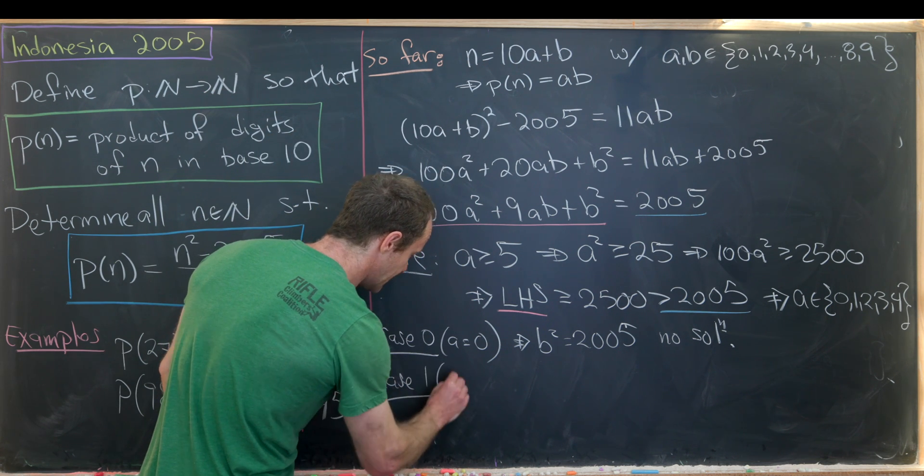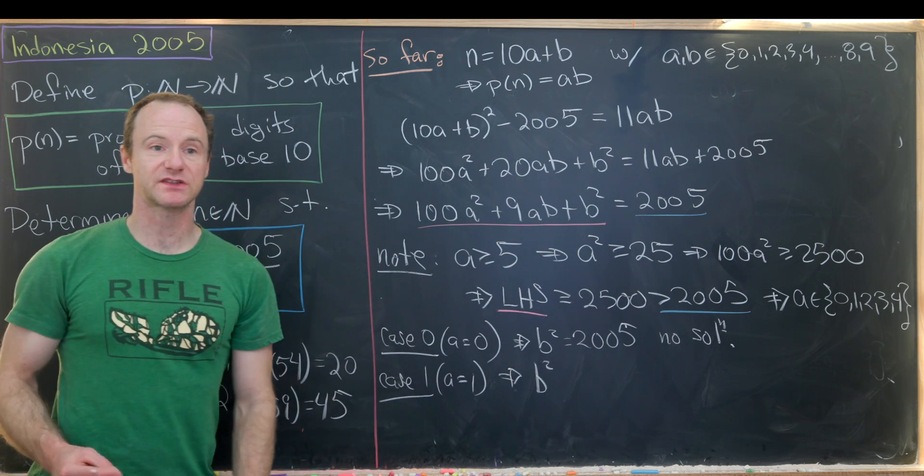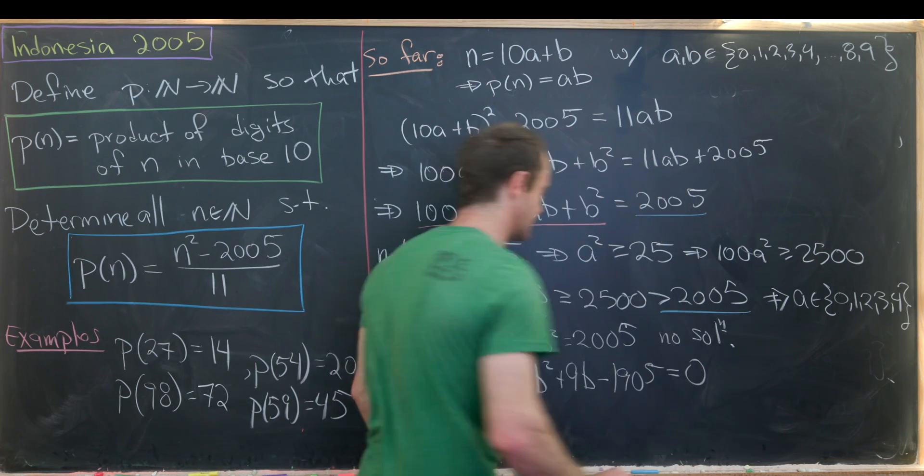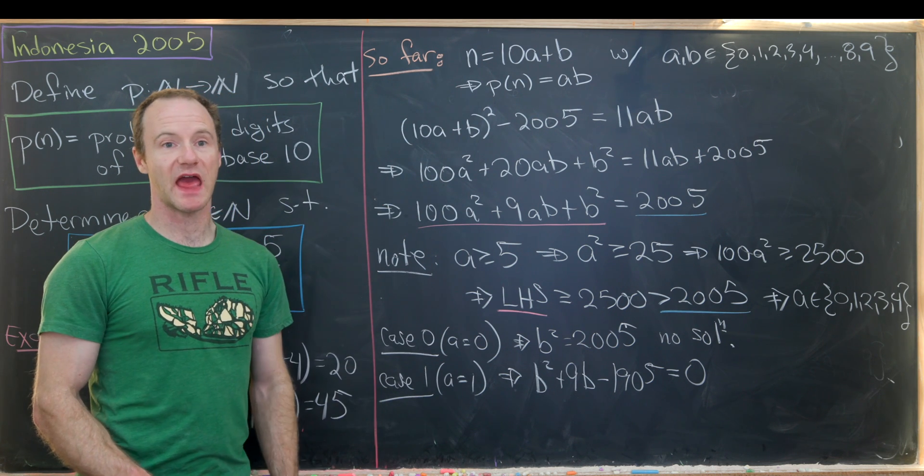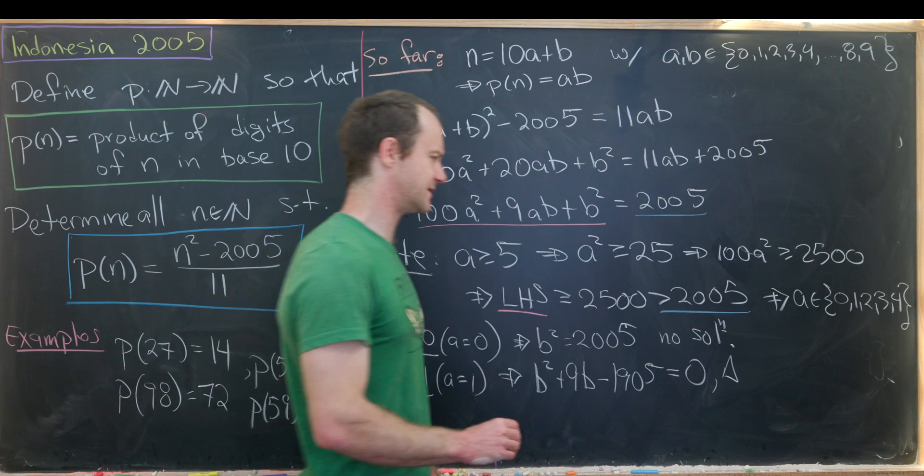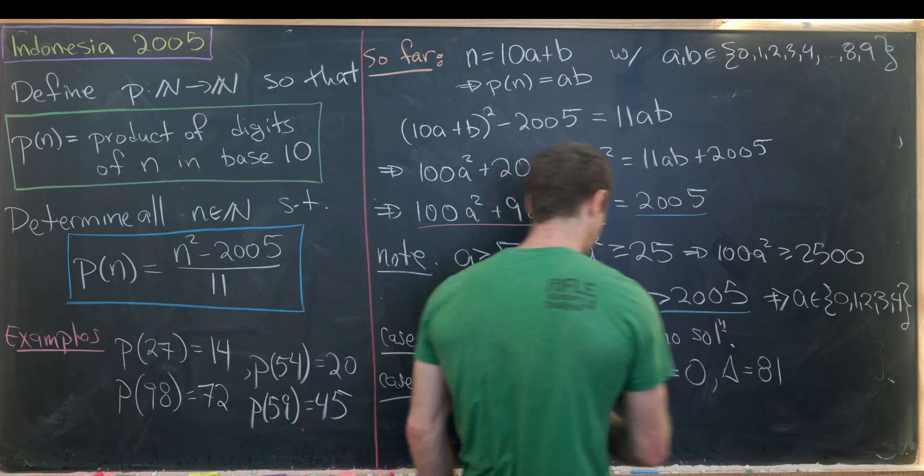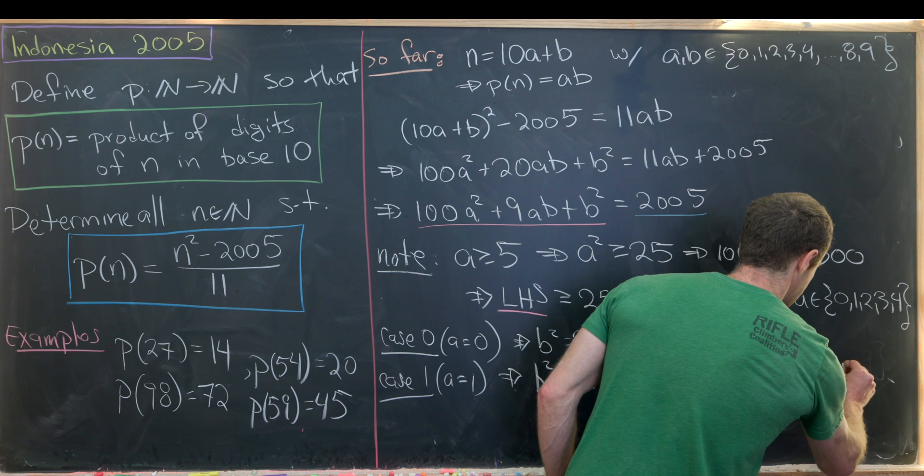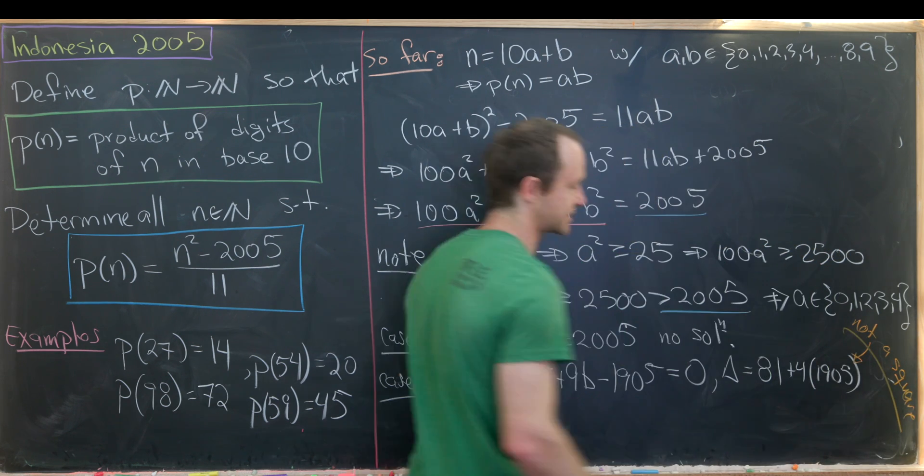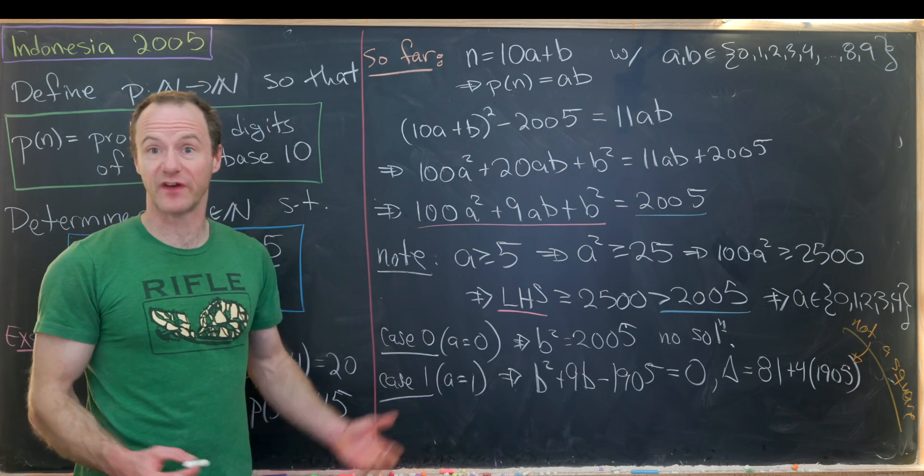Then maybe we'll move on to the next case. So case number one, that'll be the case when a is equal to one. So that's going to collapse everything to the quadratic equation given by b squared plus 9b minus 1905 equals 0. So I move some things around but that's pretty easy to do from this equation just with a equals 1. Then you probably want to check if there's an integer solution to this. You can do that by looking at the discriminant. So the discriminant, which is sometimes given the symbol delta. So that's b squared minus 4ac. So b squared, that's going to be 81 minus 4ac. So that'll be plus 4 and then 1905. But you can check that this is also not a square. And since this is not a square, that means that this thing does not have an integer solution. So in this case, we also cannot factor it. You could also check that if you wanted to.